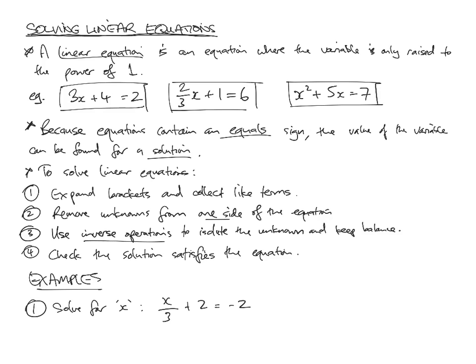An equation is a set of maths with an equals sign, basically, involving variables. But a linear equation — the linear part — dictates that the variable is only raised to the power of 1. So, for example, 3x plus 4 is equal to 2. There's no exponent written over x, so it is to the power of 1, so that is a linear equation.